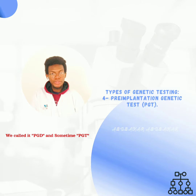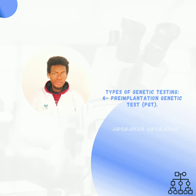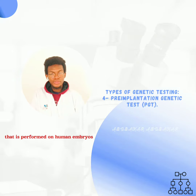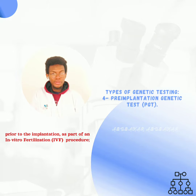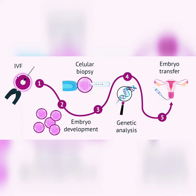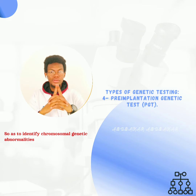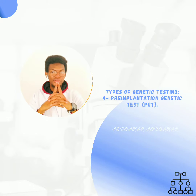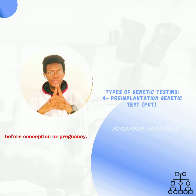We call it PGD, and sometimes PGT. It is a genetic testing procedure that is performed on human embryos prior to implantation as part of an in vitro fertilization procedure. We are asked to identify chromosomal and genetic abnormalities before conception or pregnancy.